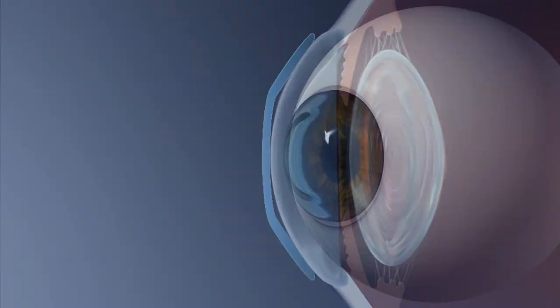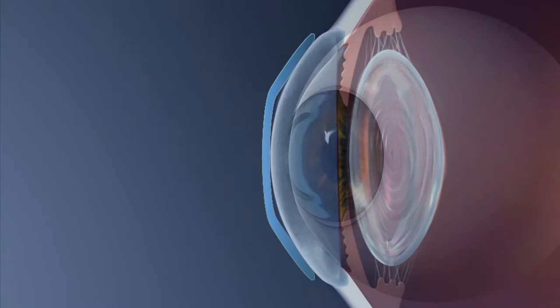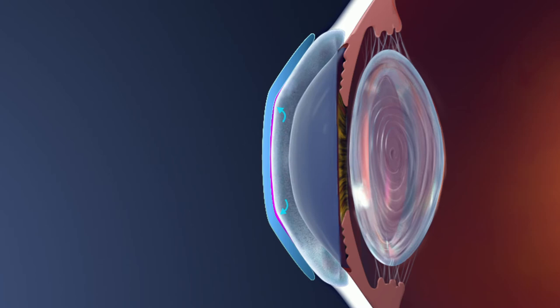During sleep, the lens reshapes the cornea by flattening its surface curvature. This decreases the angle of refraction so that light rays will converge precisely onto the macula.